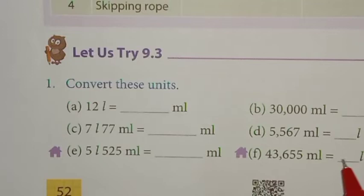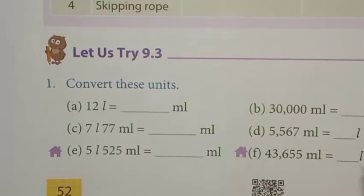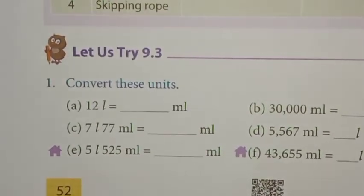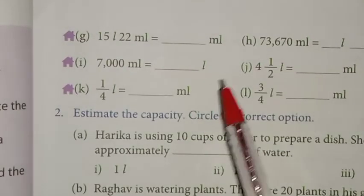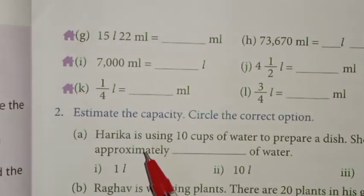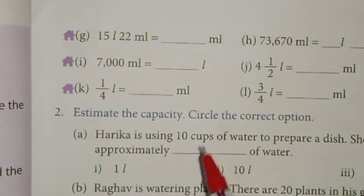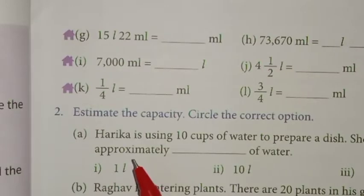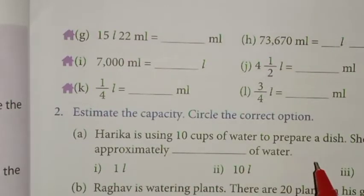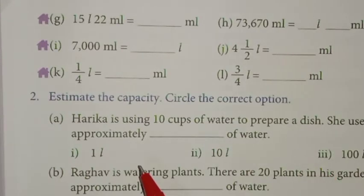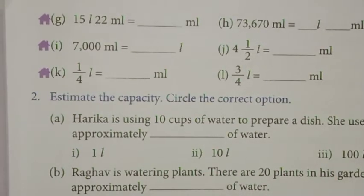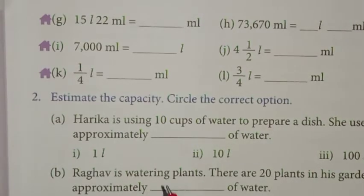Next, we can estimate the capacity. Heidika is using 10 cups of water to prepare a dish — she uses approximately how much water? For 10 cups, you can estimate approximately how many liters — is it 10 liters, or 1 liter, or 1000 liters?